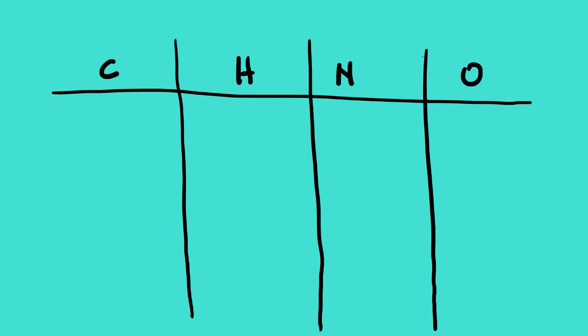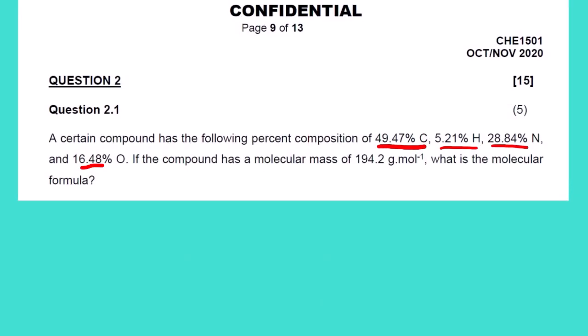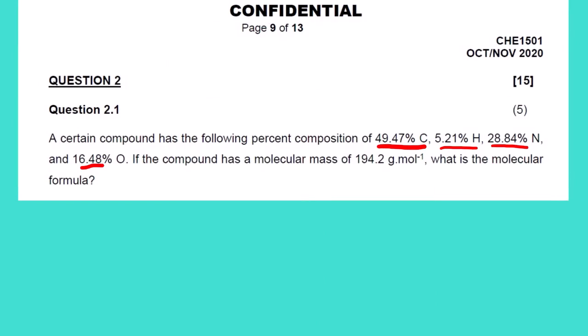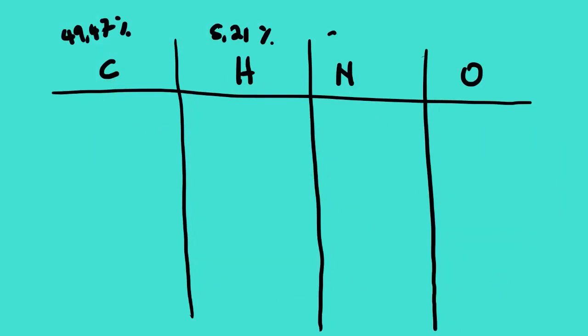We put carbon here, hydrogen here, nitrogen, and oxygen. Then we enter our data: 49.47% for carbon, 5.21% for hydrogen, 28.84% for nitrogen, and 16.48% for oxygen. You can check that the sum of all these mass percentages should give you 100 — then you are good to go.